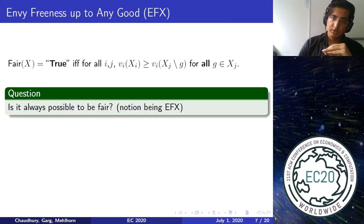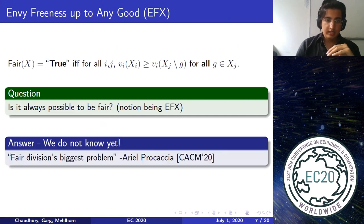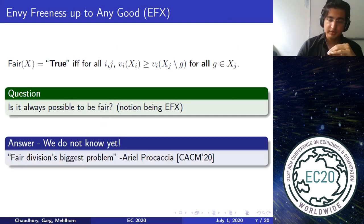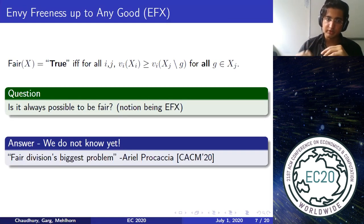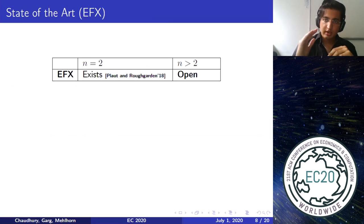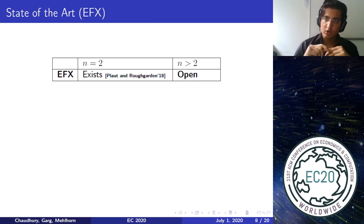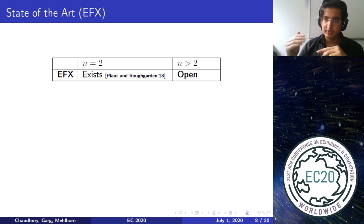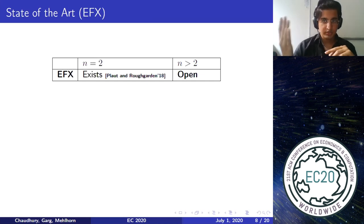Now we ask the same question: under this notion of fairness, is it always possible to achieve an EFX allocation? The answer is that we don't know yet. Many people consider this one of the most important open problems in discrete fair division. In the most general case — agents with non-identical additive valuations — we only know EFX exists for two agents via a simple cut-and-choose protocol. For three or more agents, this question is still open.